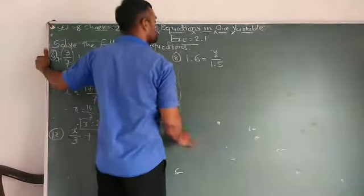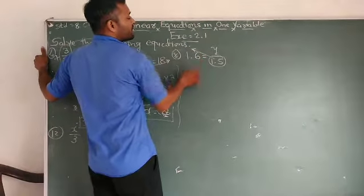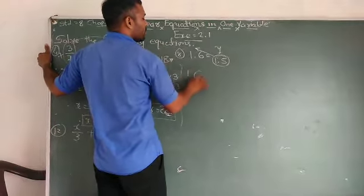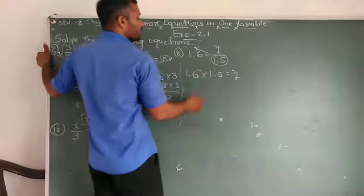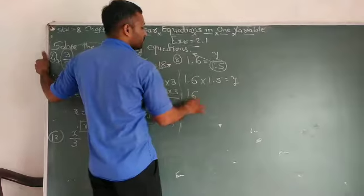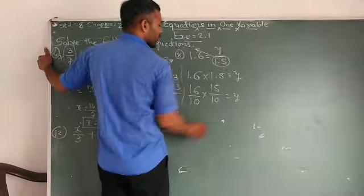Next is 1.6 = y/1.5. So now, 1.5 is in division, so multiplication: 1.6 multiplied by 1.5 = y. Removing the point, 16/10 × 15/10 = y.